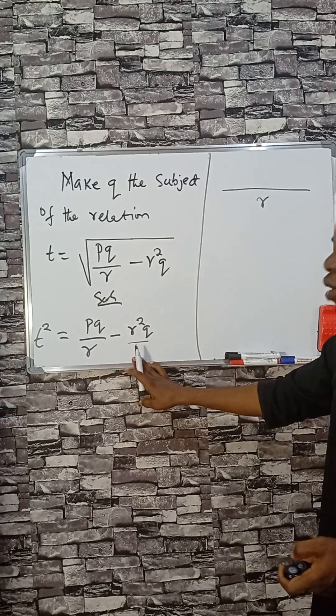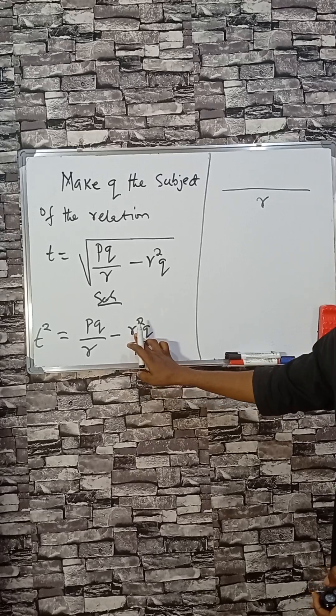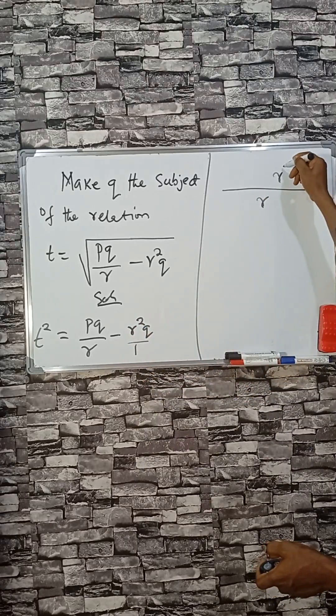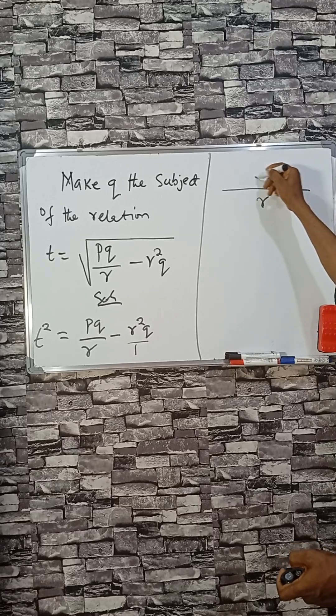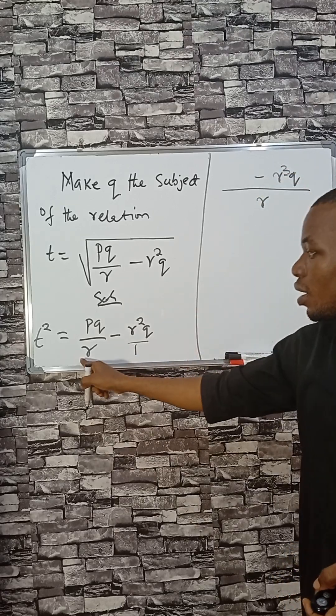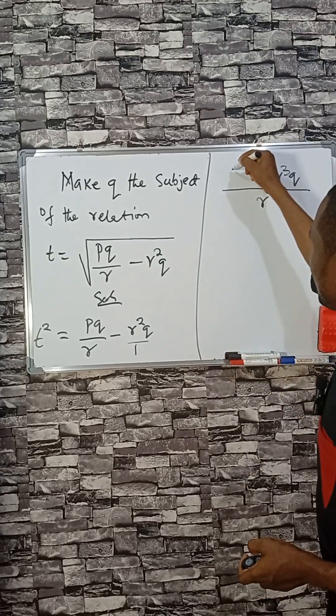r divided by one is same r, then r times what is up here, that will be r cubed times q. Then minus r divided by r is one, then one times what is here, that will be p